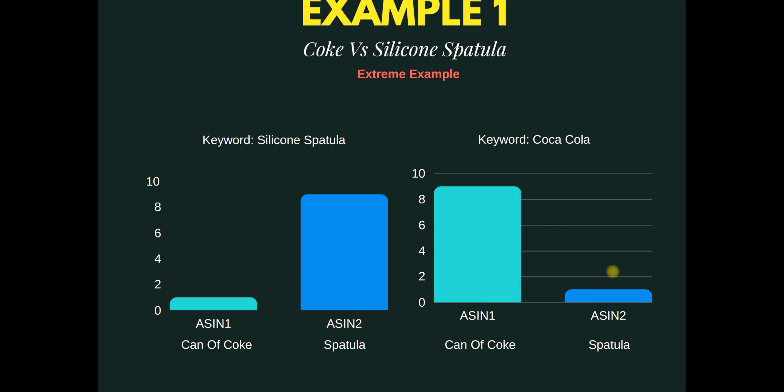Amazon takes a look at your entire listing and says, 'Okay, what is this product?' Even though Coca-Cola is in the listing, Amazon knows that this ASIN is a spatula. Therefore, you may notice in your advertising that you get less impressions. You think you should be getting those impressions, but you're not. You are selling a spatula and bidding on spatula, but Amazon says your product isn't a spatula — probably because you have other keywords in there that you shouldn't have.